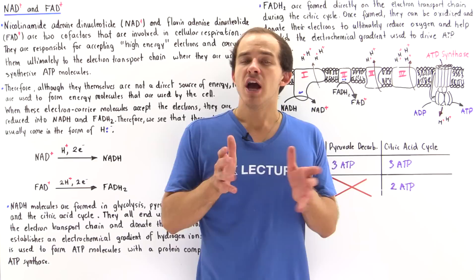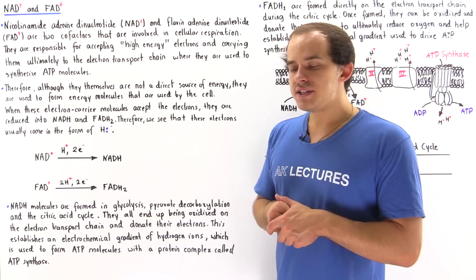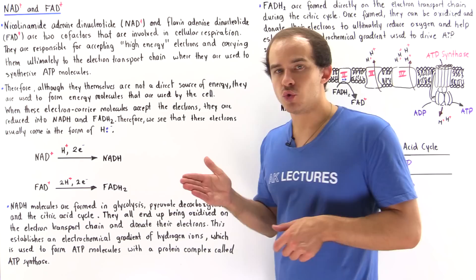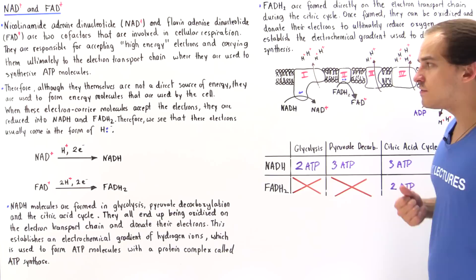The electron transport chain uses these high energy electrons to synthesize ATP molecules. Although NAD+ and FAD+ molecules are not a direct source of energy, they are used to form the energy molecules used by the cell — namely adenosine triphosphate, or ATP.